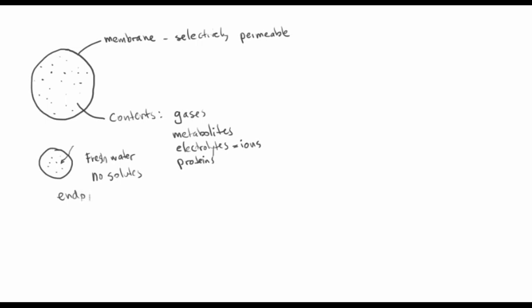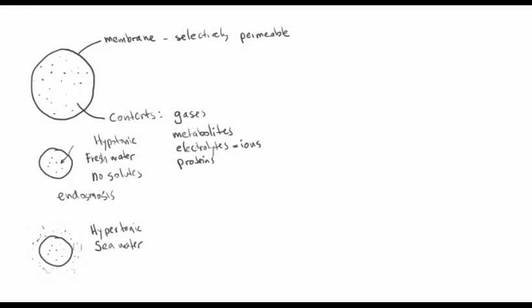We call this endosmosis — osmosis into the cell — and this is the phenomenon we expect any time a cell finds itself in a hypotonic milieu. We could take that same cell and put it into a seawater environment where the concentration of solutes is greater than inside the cell. This is a hypertonic environment, and since more osmotic solutes outside are demanding the attention of water molecules, the water moves in the other direction — we have exosmosis — and the cell will tend to shrivel up or crenate.